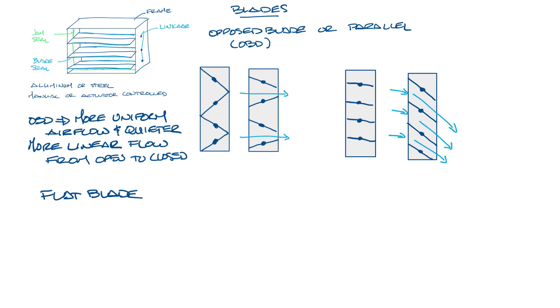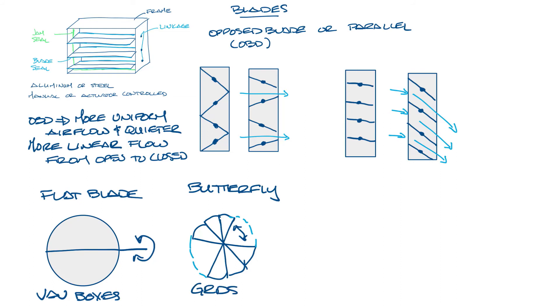In VAV boxes, you'll also see single blade dampers. That is a single blade that rotates around the center like this. And in diffusers, you may also see butterfly dampers that are made up of small rotating blades that kind of look like this. These types of blades tend to be simple and flat in profile.